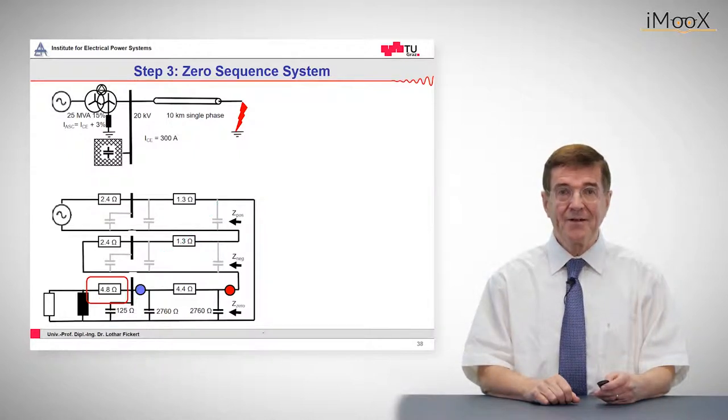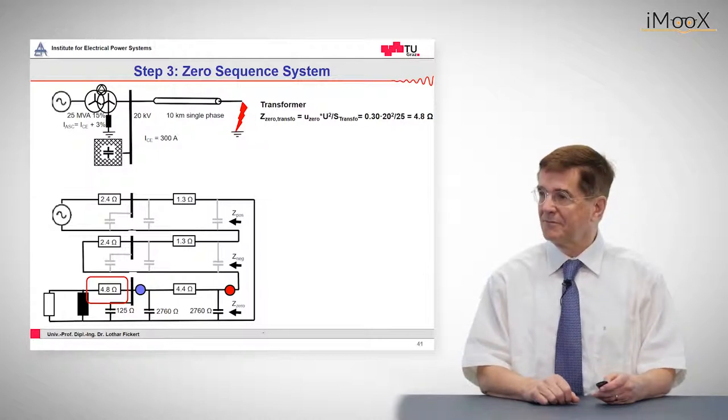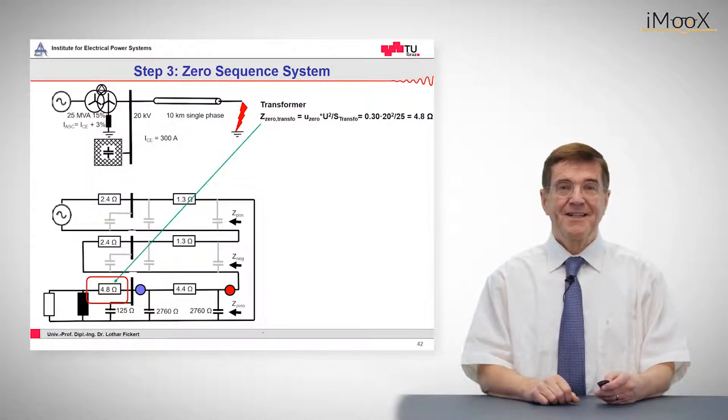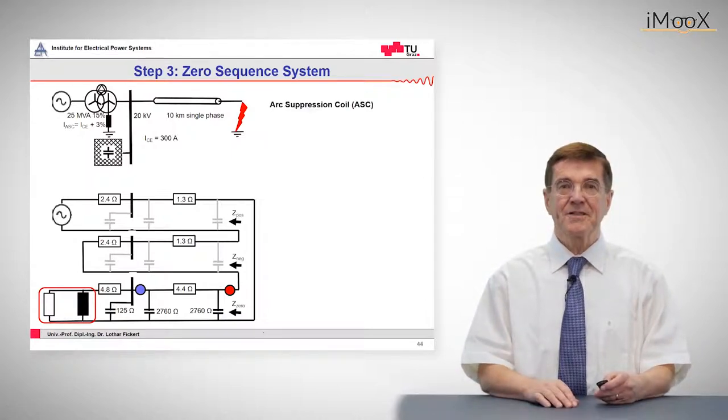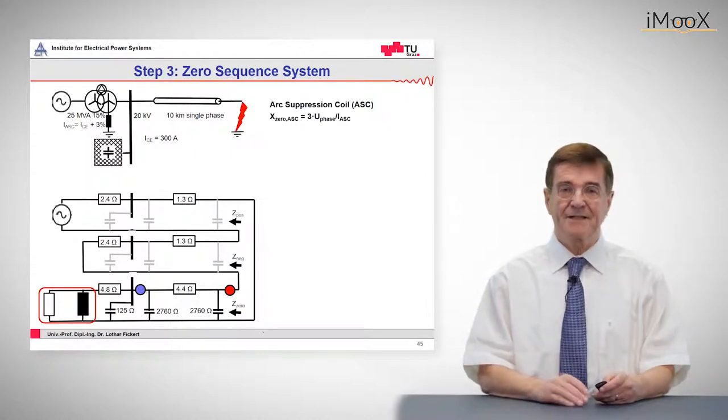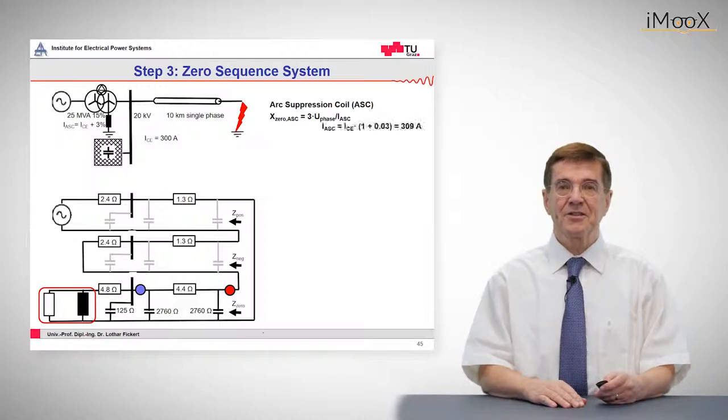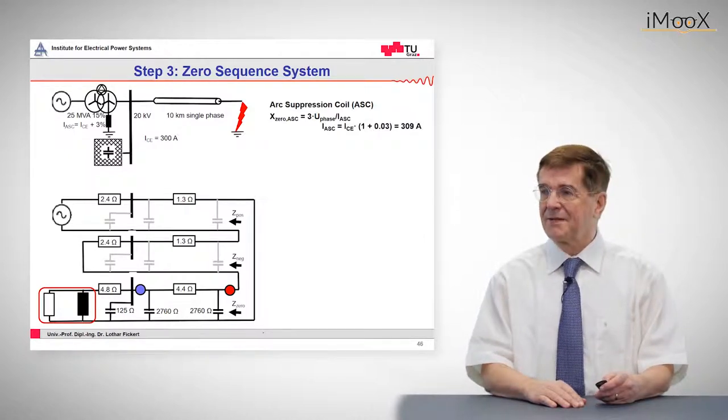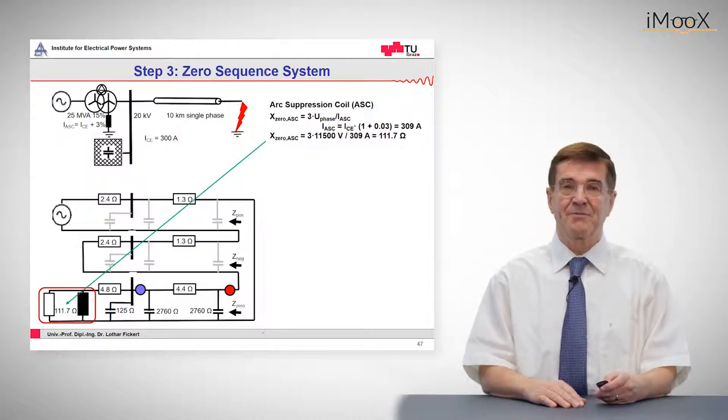So the remaining element now is the transformer. Again we have this well-known formula and it comes out as 4.8 ohms. And now the critical element is the arc suppression coil. The arc suppression coil has again an inductive reactance of three times the phase voltage divided by the current, the nominal current of this arc suppression coil. In this case it comes out as 309 ohms, and altogether it's 111.7 ohms.